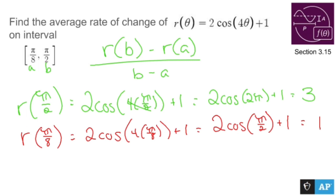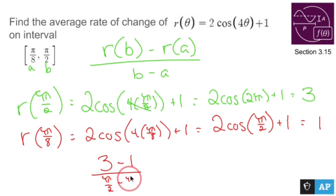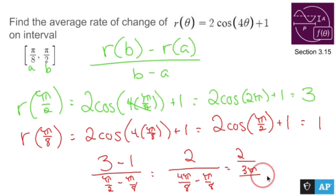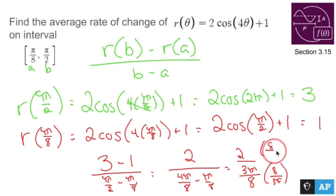Now I have r of b which is 3, minus r of pi over 8 which is 1, over b minus a, which is pi over 2 minus pi over 8. That gives 2 over — converting to eighths, pi over 2 is 4 pi over 8, so the denominator is 3 pi over 8. Multiplying top and bottom by 8 over 3 pi, I end up with 16 over 3 pi.